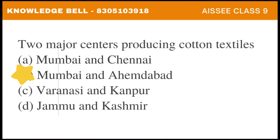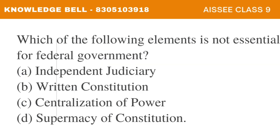The next question is: Which of the following elements is not essential for a federal government? A. Independent Judiciary, B. Written Constitution, C. Centralization of Power, D. Supremacy of Constitution. The correct answer is Option C: Centralization of Power. Centralization of Power is an element which is not essential for a federal government.